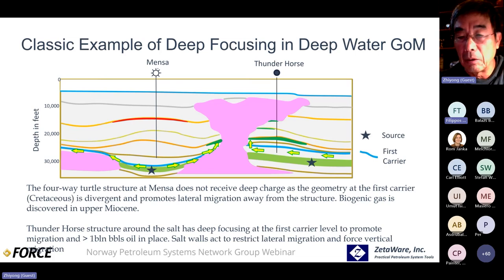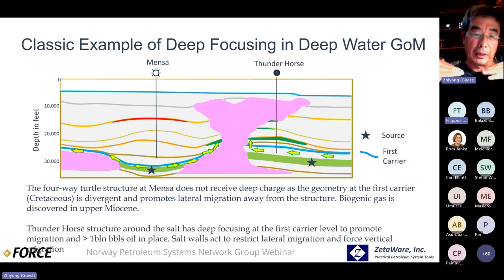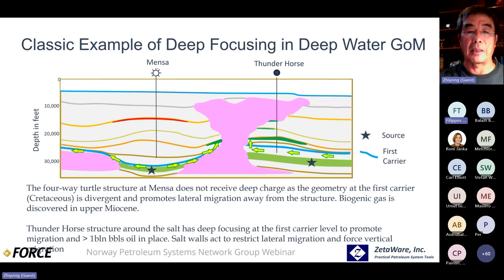If you're building a computer model and oil is permeating through vertically, it's probably because you didn't input the capillary contrast you'd see on a log or core scale. Seismic can't always see those things — you're just having homogeneous layers in your model. Vertical migration goes through that, which is not realistic.